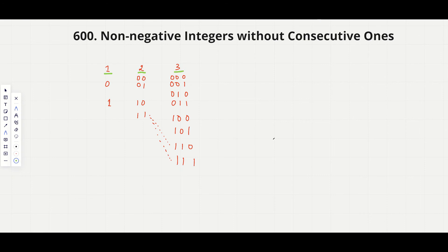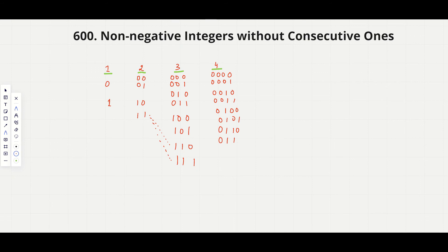Now if we have 4 bits, let's write out all the combinations. Taking 000 we get 0000 and 0001, then 001 gives 0010 and 0011, then 010 gives 0100 and 0101, and 011 gives 0110 and 0111.